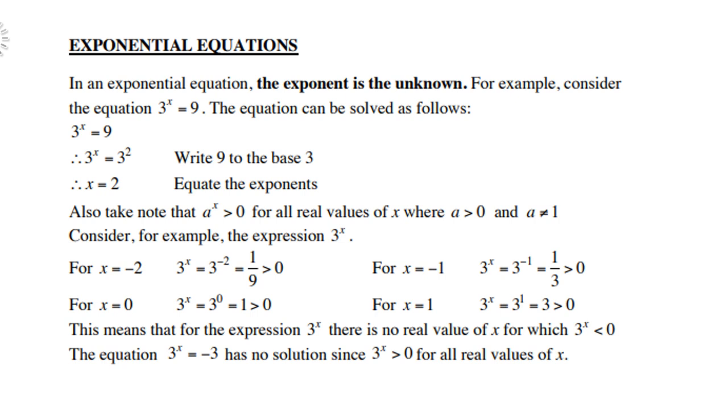For x equals to negative 2, 3 to the power x equals 3 to the power negative 2, which is 1 ninth, and that is greater than 0. For x equals to negative 1, then 3 to the power negative 1 is one third, greater than 0. For x equals 0, 3 to the power 0 is 1, and 1 is greater than 0. And for x equals to 1, then 3 to the power 1 is 3, greater than 0.